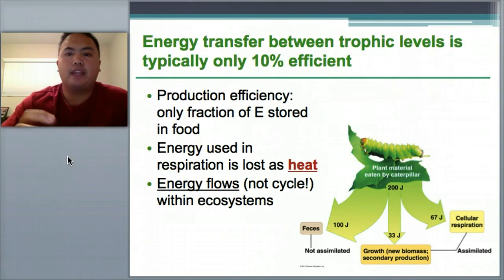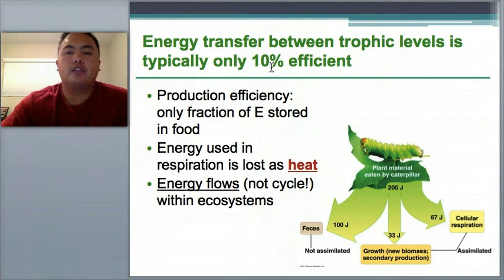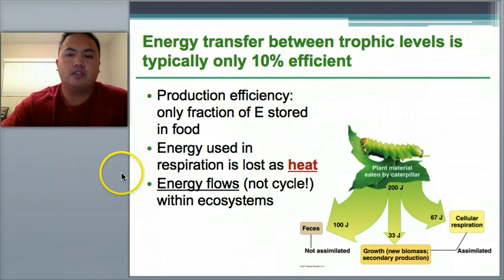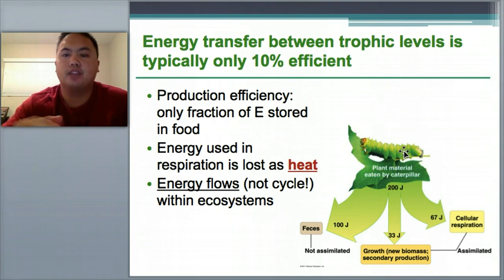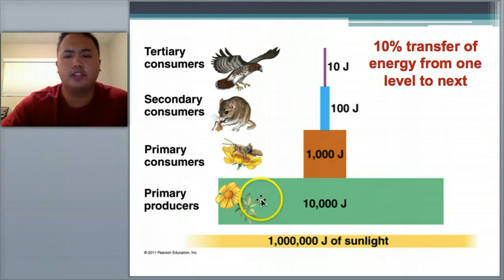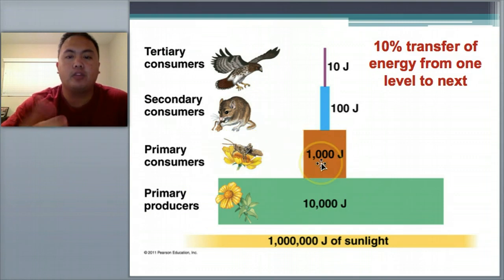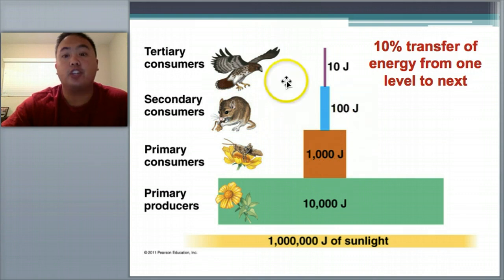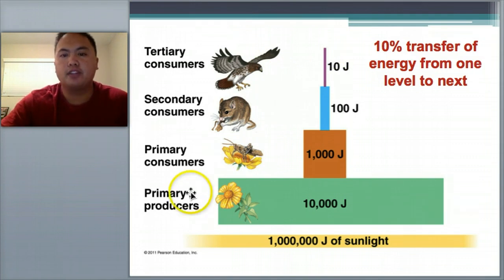Every time you go up a trophic level — every time an organism eats something else — the energy transfer is only 10% efficient. Only a fraction of energy is stored in food; the rest is lost as heat. Remember, energy flows but does not cycle. For example, if a plant has 200 joules, a caterpillar only gets about 20. With 1 million joules of sunlight: plants get 10,000, primary consumers get 1,000, secondary consumers get 100, and tertiary consumers only get 10 joules. That's why people suggest a vegetarian diet — eating primary producers gives you more energy.